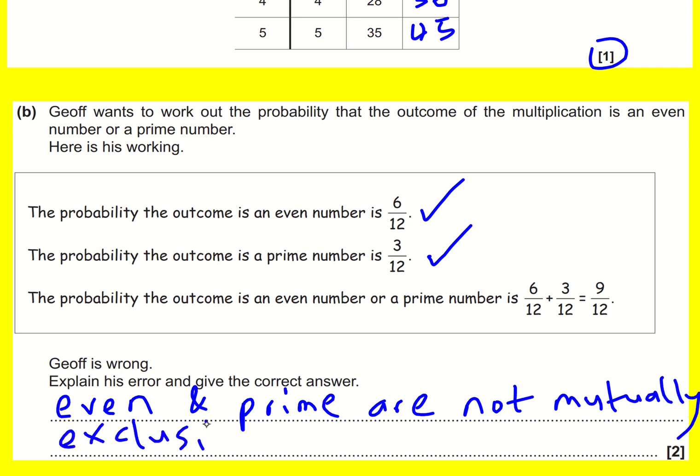That is, they can happen at the same time. So I think mutually exclusive is a good way to throw in here, but you'd probably get away with saying they just can't happen at the same time. And the correct answer therefore is that we've double counted for the 2, and so it's going to be 8 over 12.